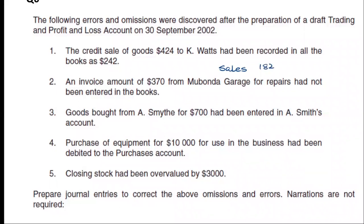182 is the correction amount. We need to credit sales by 182 and debit K-Watt by 182 to correct the entry.